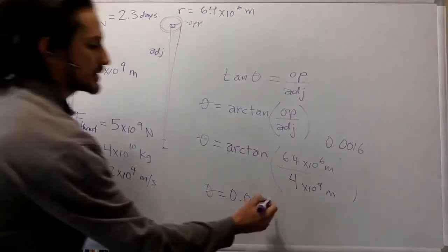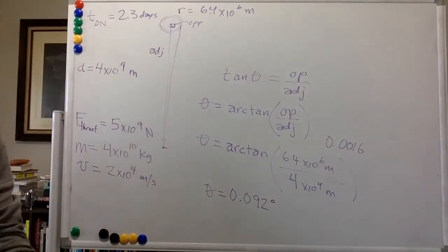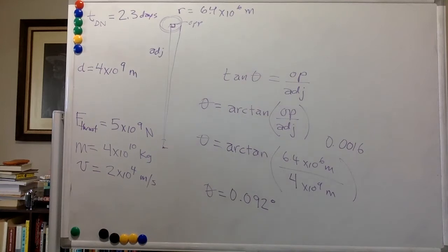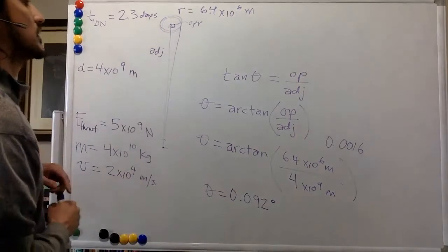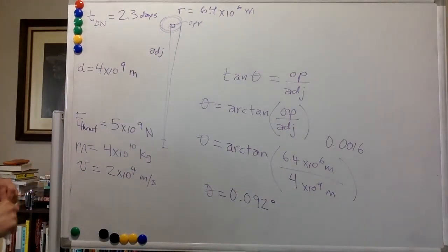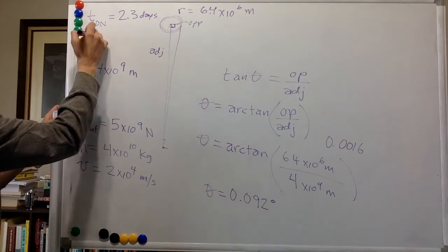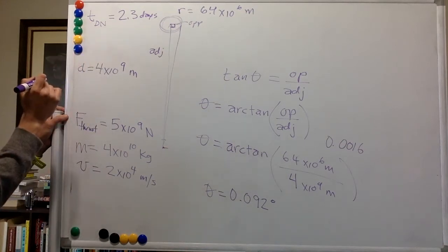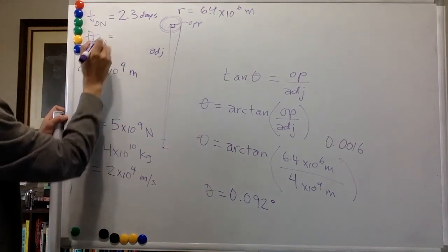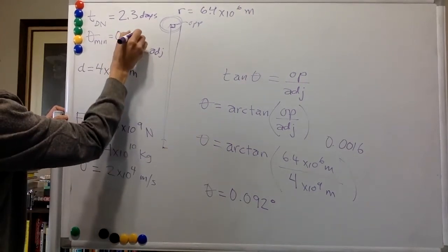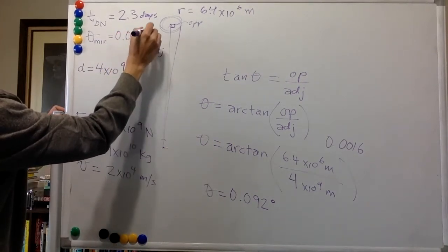Rounding up, that's about 0.092 degrees. So theta minimum equals 0.092 degrees. It's a pretty tiny angle, but the distance involved is pretty large.